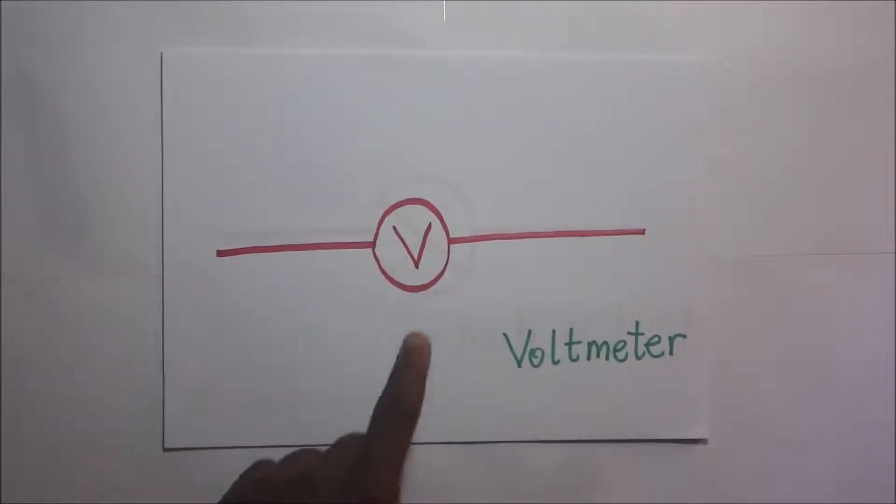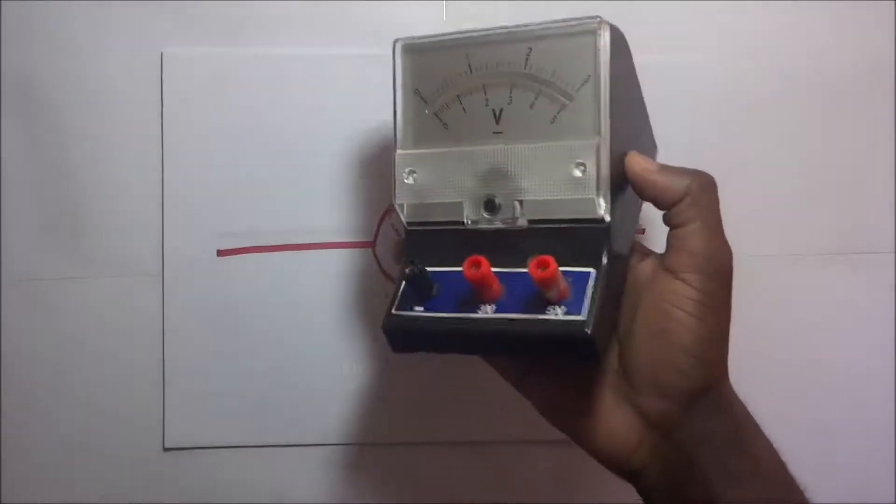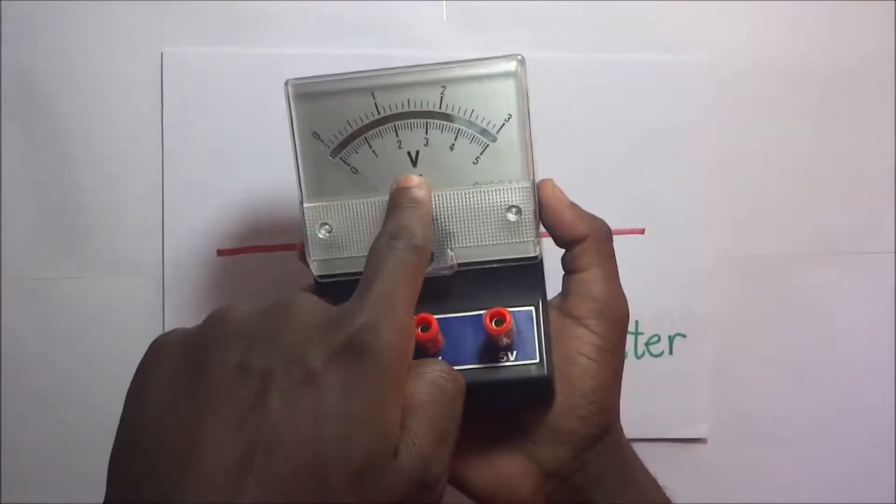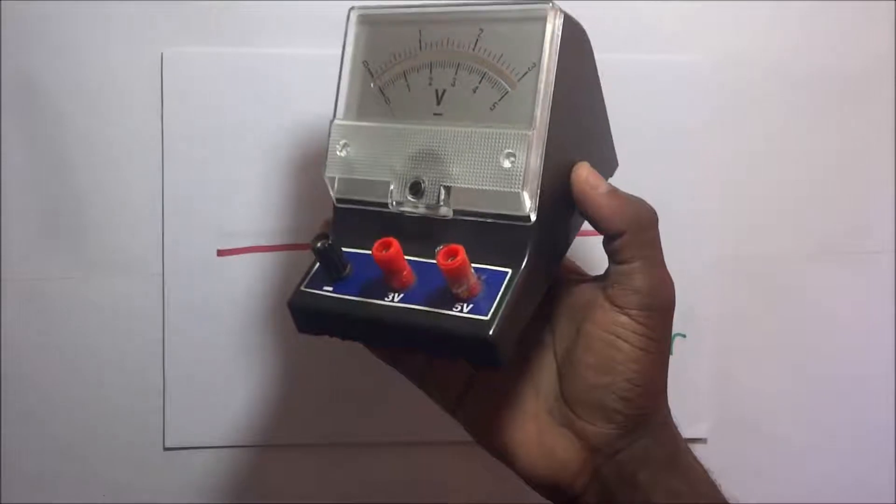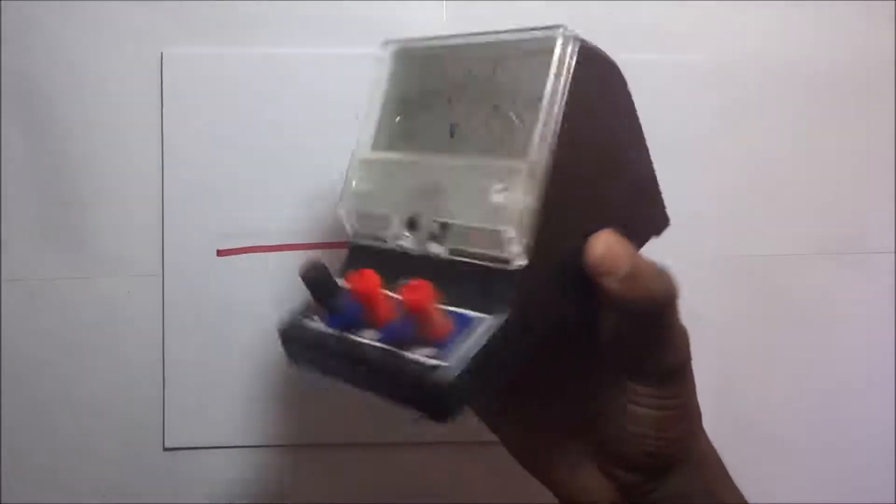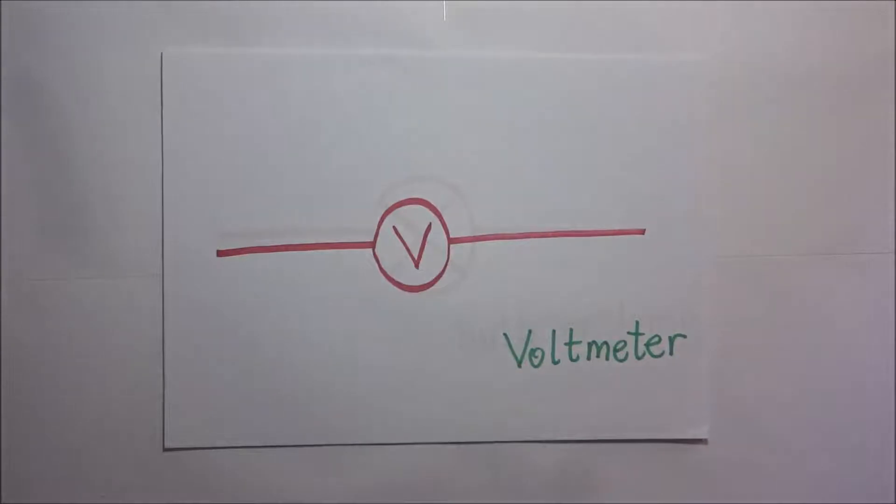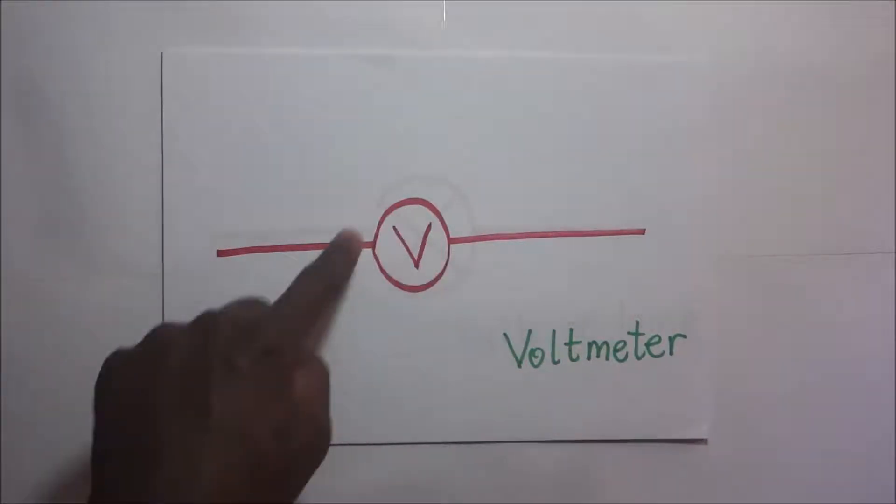Then we have what we call a voltmeter. This is how we represent it. The voltmeter looks like the ammeter, only that the difference here is that it has the 'V' right there. Instead of drawing this whole thing in a circuit diagram, we simply represent it by this circle with the V.